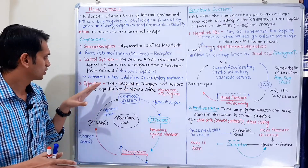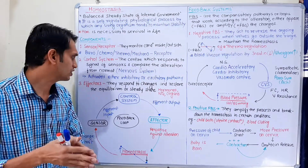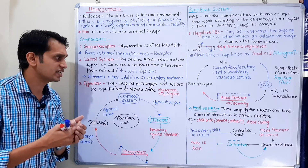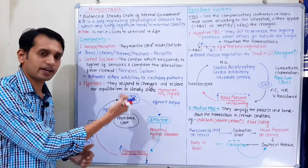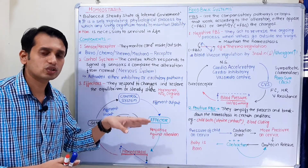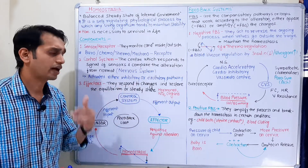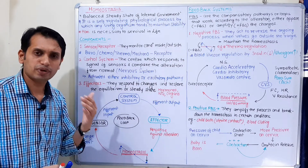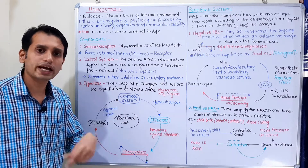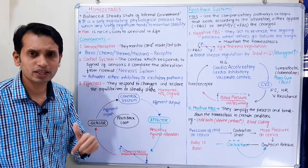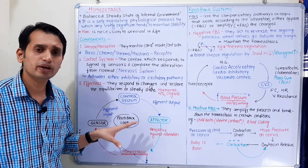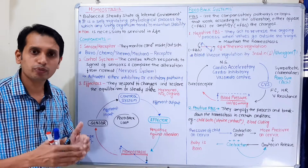The effectors respond to changes and restore the equilibrium or steady state. They receive signals from the control system and respond accordingly to restore the internal environment. Effectors include hormones, neurotransmitters, local hormones, exocrine glands, and organs — all of which regulate physiology. This entire loop is basically the negative feedback loop, as most pathways in the body operate via negative feedback.